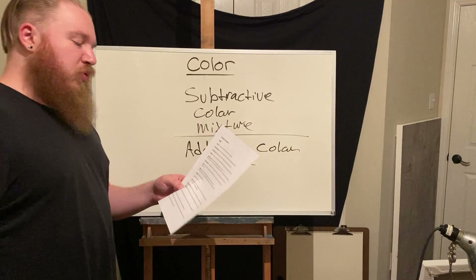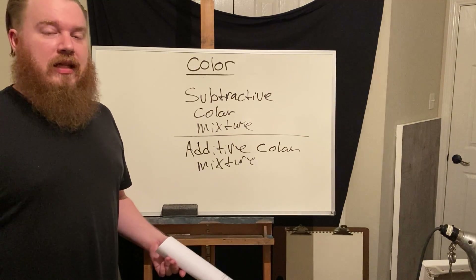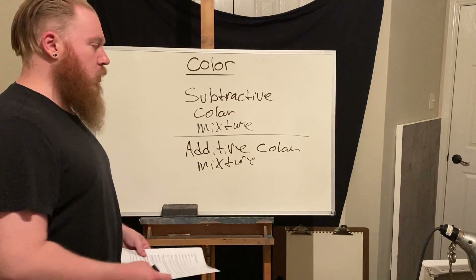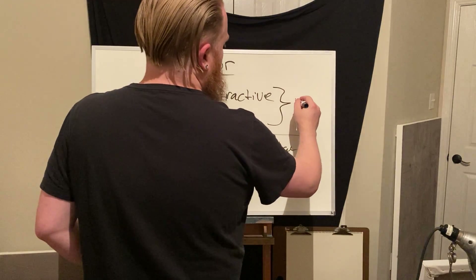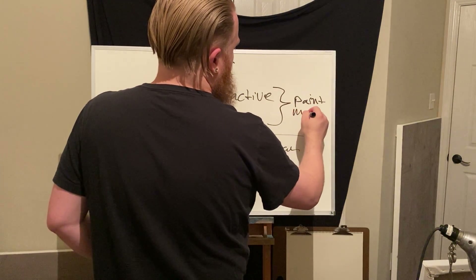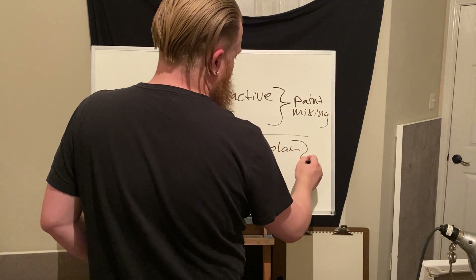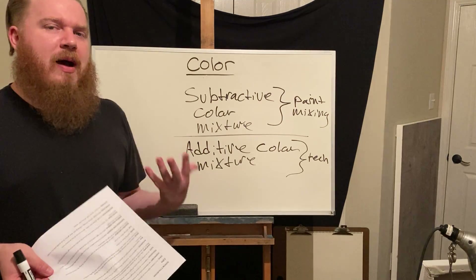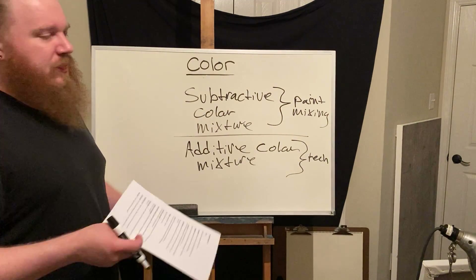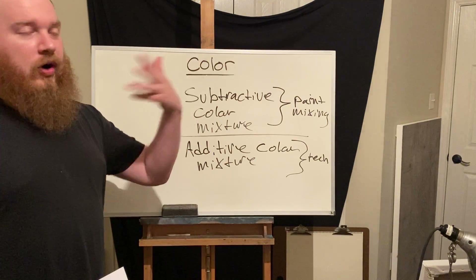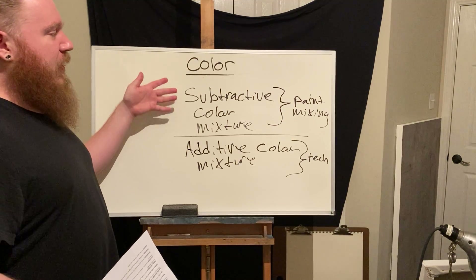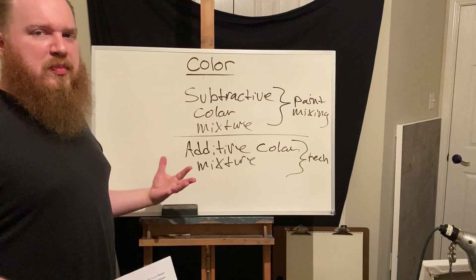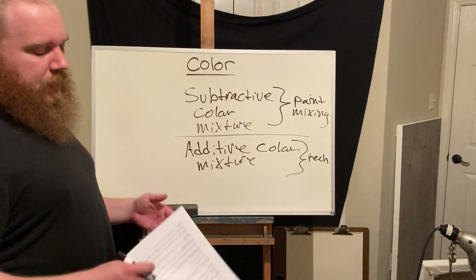As opposed to subtractive mixing, there is also additive color mixture. This is when the light primaries of red-orange, green, and blue-violet combine to create white light. This is actually how your cell phone screen, TV, computer, and LEDs all work. So subtractive mixing is essentially paint mixing, whereas additive mixing is how technology creates color. For our purposes, we'll be dealing with subtractive color mixing — physically mixing two pigments together.